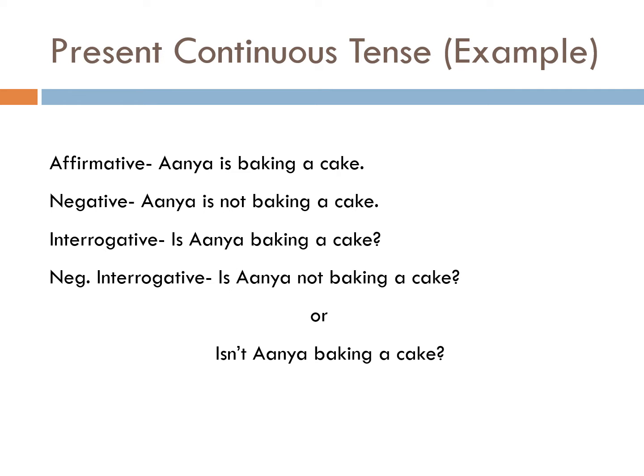Now the examples of present continuous tense in affirmative, negative, interrogative, and negative interrogative forms. Affirmative: Anya is baking a cake. Negative: Anya is not baking a cake. Interrogative: Is Anya baking a cake? Negative interrogative: Is Anya not baking a cake? Or, Isn't Anya baking a cake?